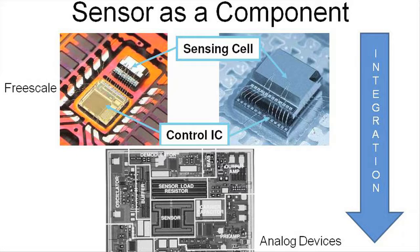The control circuitry is either by the side or actually underneath the sensing cell. In the lower example, we have the sensor integrated with signal conditioning circuitry at the same time and in a monolithic-level structure.